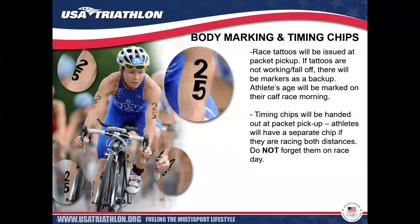For body marking and timing chips: race tattoos will be issued at packet pickup. You'll receive a quad set of tattoos — these must go on the outside of each bicep and the outside of each calf. Upon check-in to transition, your race age as of December 31, 2019 will be written on the back of each calf. Timing chips are handed out at packet pickup; if racing both distances, you'll have a separate chip for each. My recommendation is to put these on the night before so you don't forget race morning.